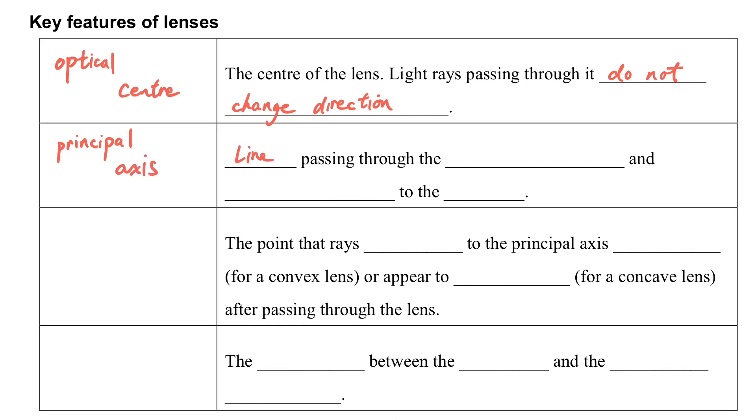The principal axis is a line passing through the optical center, which is perpendicular to the lens. And then the focus. The focus is the point where rays, when the light ray is parallel to the principal axis, for convex lens it will converge to, and for concave lens it will diverge from.